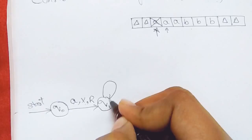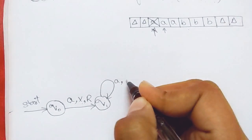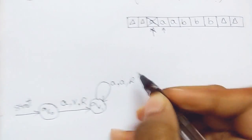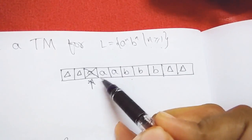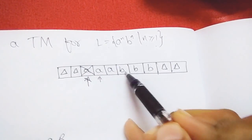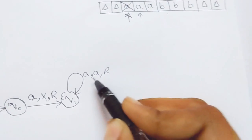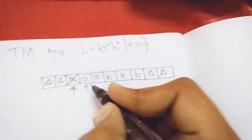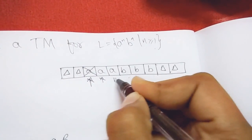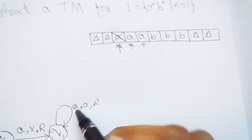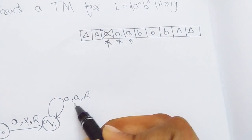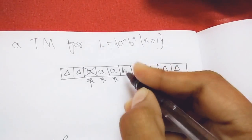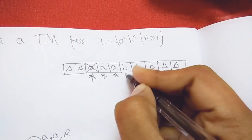In state q1, wherever there is A, replace it with A itself and move right, because I don't need to process this A yet — I have to first process the corresponding B for the first A. So A is replaced with A itself and the header moves right, passing over all remaining A's.